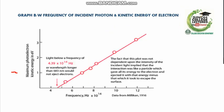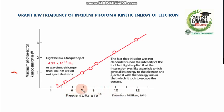This is the graph between frequency and the kinetic energy of incident photons. As frequency increases beyond the threshold, the kinetic energy of the emitted photoelectrons increases. Higher frequency corresponds to greater kinetic energy of the photoelectrons.